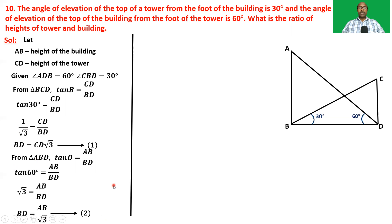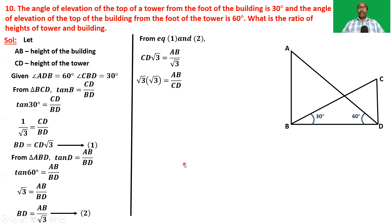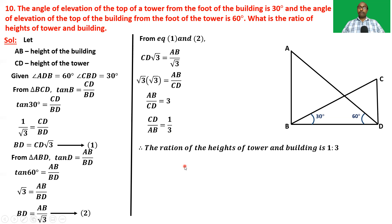Both equations represent BD, so equating: CD × √3 equals AB by √3. Therefore √3 × √3 equals AB by CD, so AB by CD equals 3, meaning CD by AB equals 1 by 3. Here CD is the height of the tower and AB is the height of the building. So the ratio of the heights of tower and building is 1 : 3.